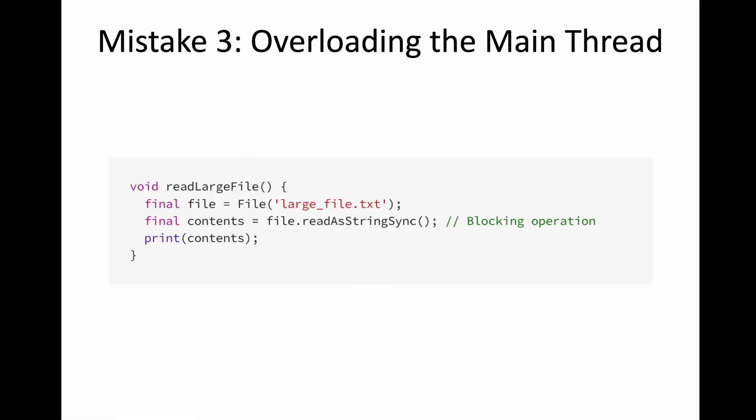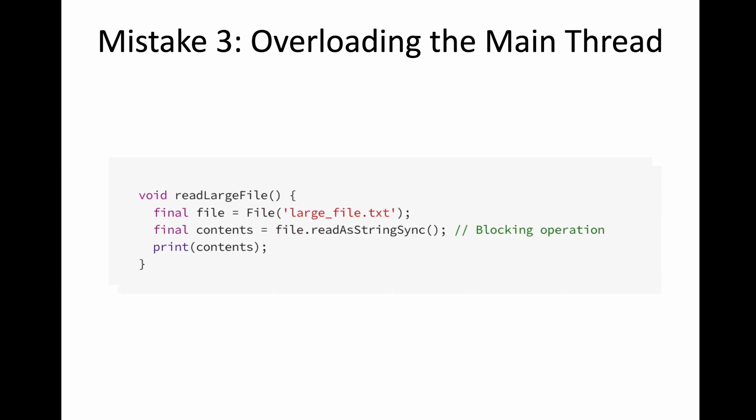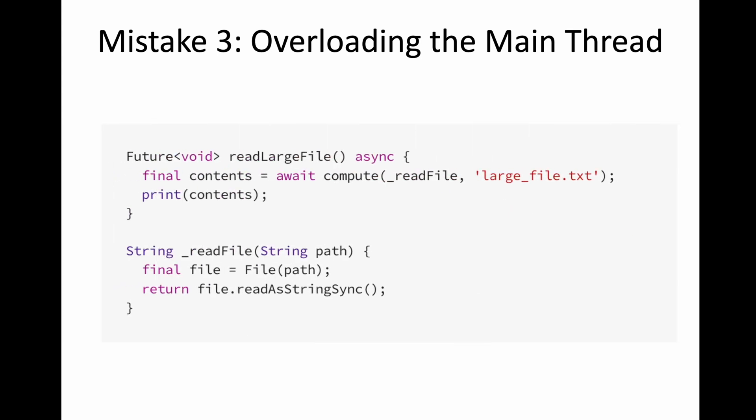Another mistake is blocking the main thread. When you read a file, you don't want to do it on the main thread. In Flutter, you can easily separate this by using the compute function — just put the file reading inside compute and your main thread will remain very smooth.